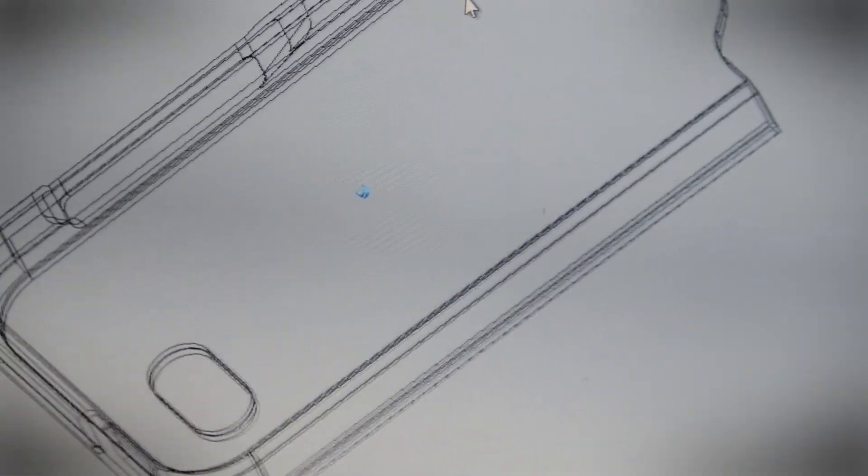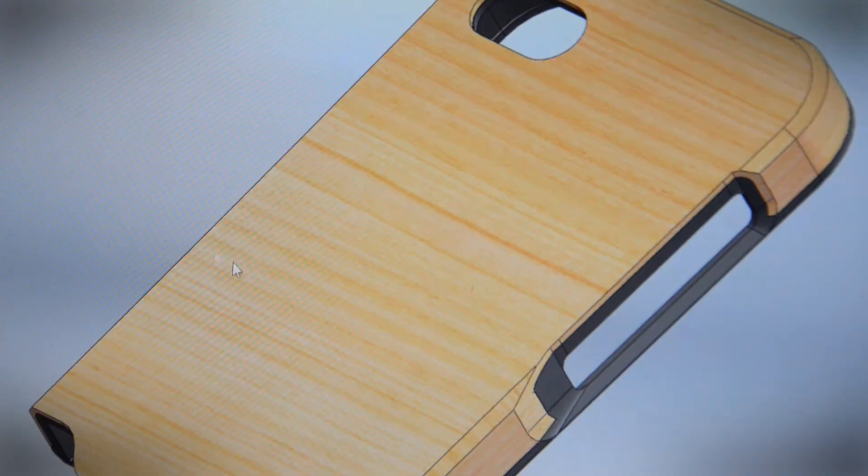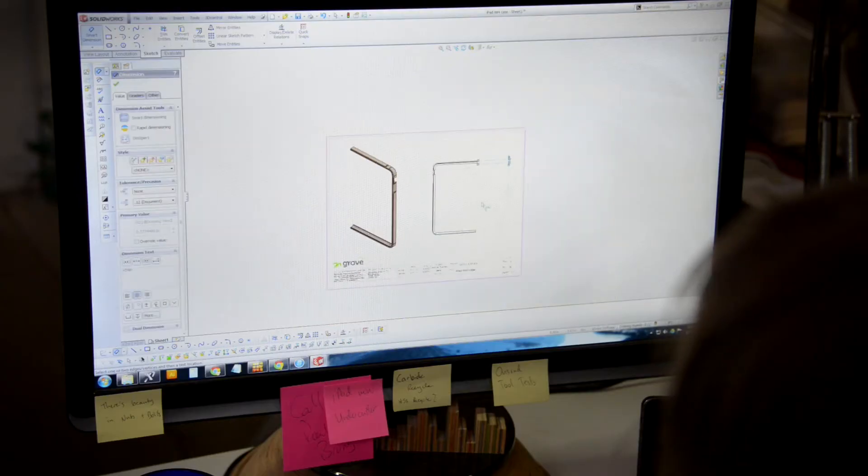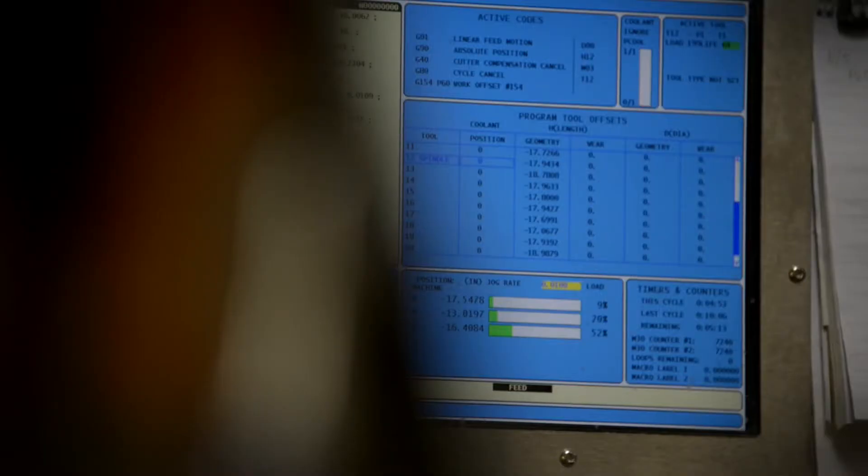But when your main product is a case for the annually updated iPhone, you also need to be able to design and build a new case very quickly. Everybody wants it, everybody wants it fast. That's very challenging to figure out the new specs and modify our products to work with the new devices. We either have to guess or be really fast, and we're really fast.